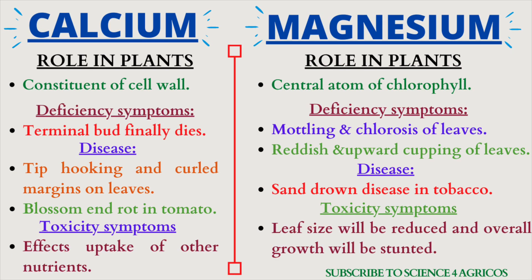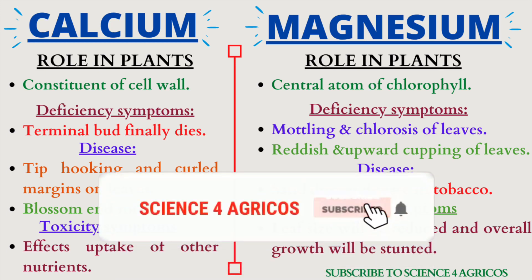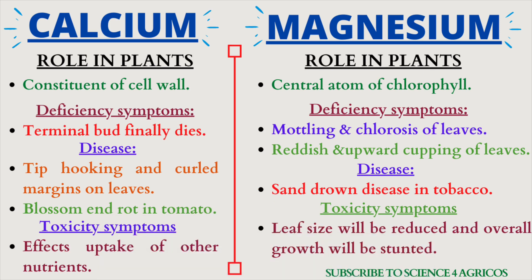Now calcium. Calcium is a constituent of the cell wall. Usually the terminal bud dies in case of calcium deficiency. The disorders are tip hooking and curled margins on leaves, and blossom end rot in tomato. Toxicity affects the uptake of other nutrients.